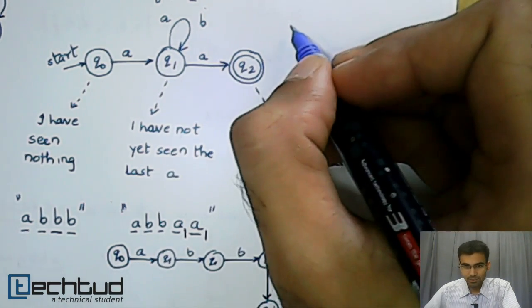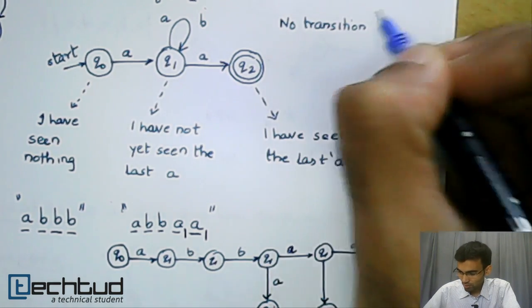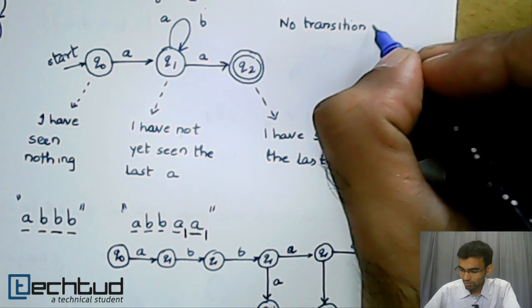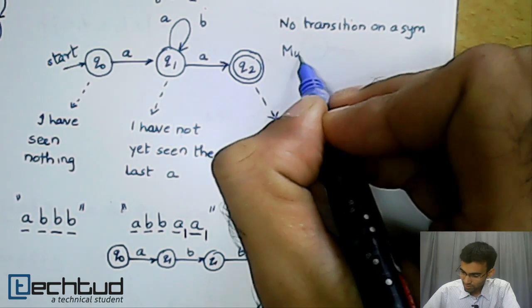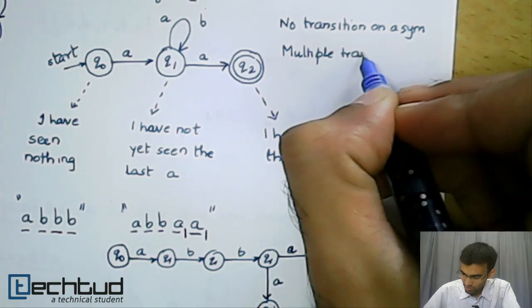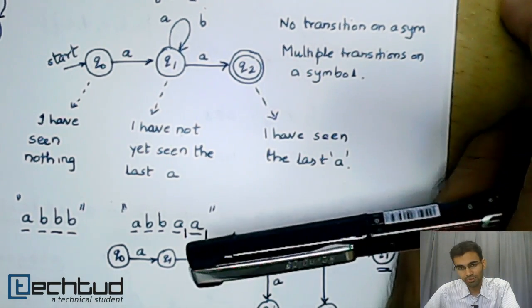In an NFA, it is possible that there is no transition on a particular letter, on a symbol. There can be multiple transitions from a state on a symbol. These are the two possibilities when you have an NFA.